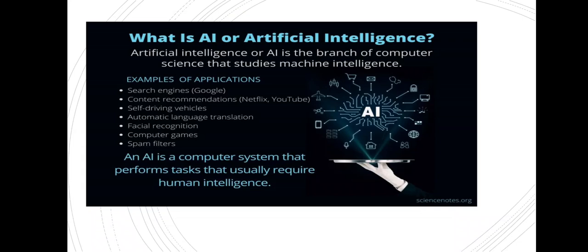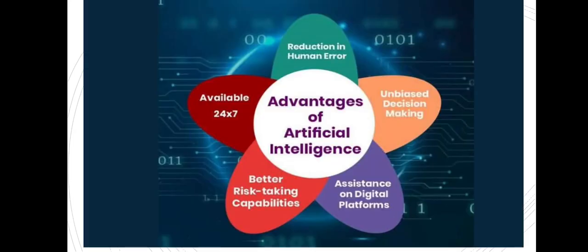Other examples include self-driving vehicles, facial recognition, computer games, and spam filters. Now, what are the advantages of artificial intelligence? They are: reduction in human error, unbiased decision making, availability 24/7, and better risk-taking capabilities.